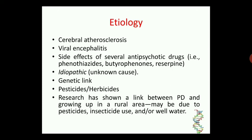There might be a genetic link, a hereditary form. We cannot say that 100% of individuals will develop Parkinson's disease due to genetic factors, but those with a family history of Parkinson's disease are more prone to develop it.